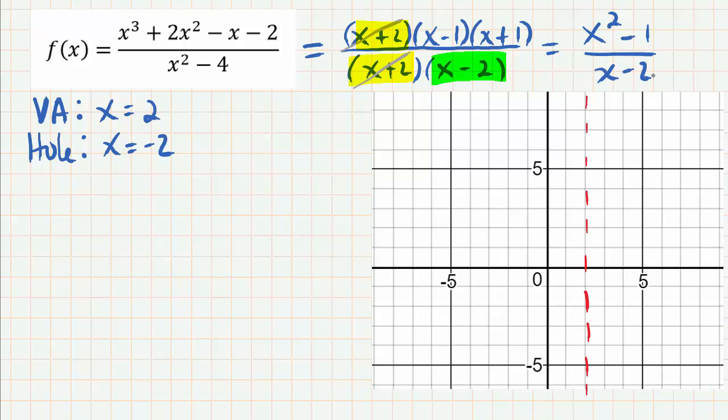If we plug negative 2 into that simplified expression right here, that will give us the value of the hole. So negative 2 squared is 4, 4 minus 1 is 3, we're gonna have 3 over negative 4, so that's negative 3 fourths. That's going to be the hole in the graph, so negative 2, negative 3 fourths - that's somewhere about right there.